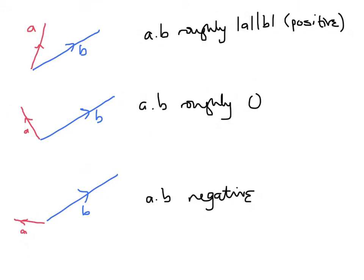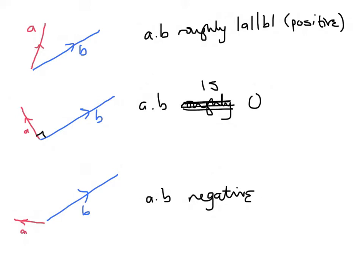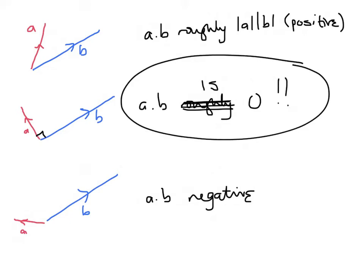The way we sometimes think about the dot product is that it's a measure of the extent to which a and b are like each other — to what extent they go in the same direction. Going in the same direction would mean theta was zero. As you increase theta from small to larger, you decrease the extent to which a is going in the same direction as b. At 90 degrees, a is going in the completely opposite direction to b — that's where the dot product is actually zero, not roughly zero. And if we keep going, we go negative because a is going in a backwards direction to b.